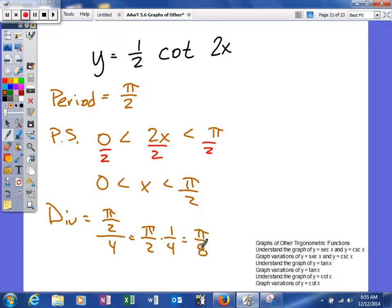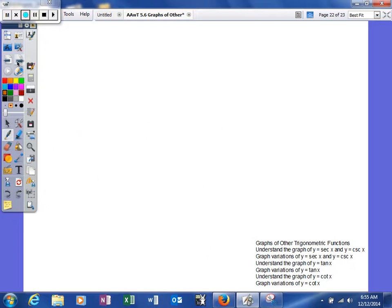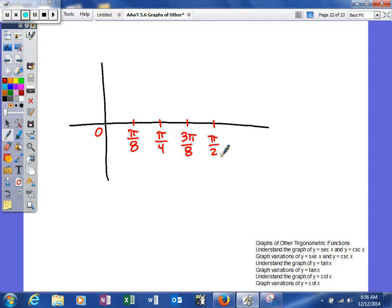So that's what we're going to count by, so we'll start here, add this 4 times, in the hopes of getting there. So let's see, we'll go 0, π eighths, 2π eighths is π fourths, and this will be 3π eighths, and then one more, look at this, π halves. Alright, so we have our five values that we're going to use.